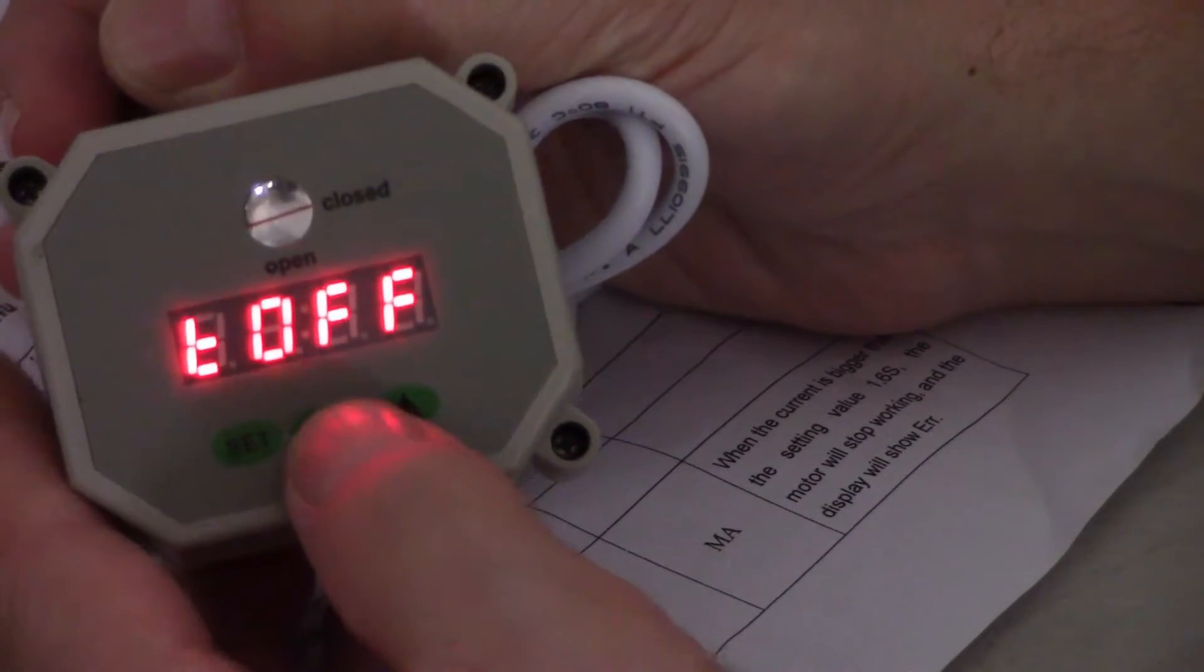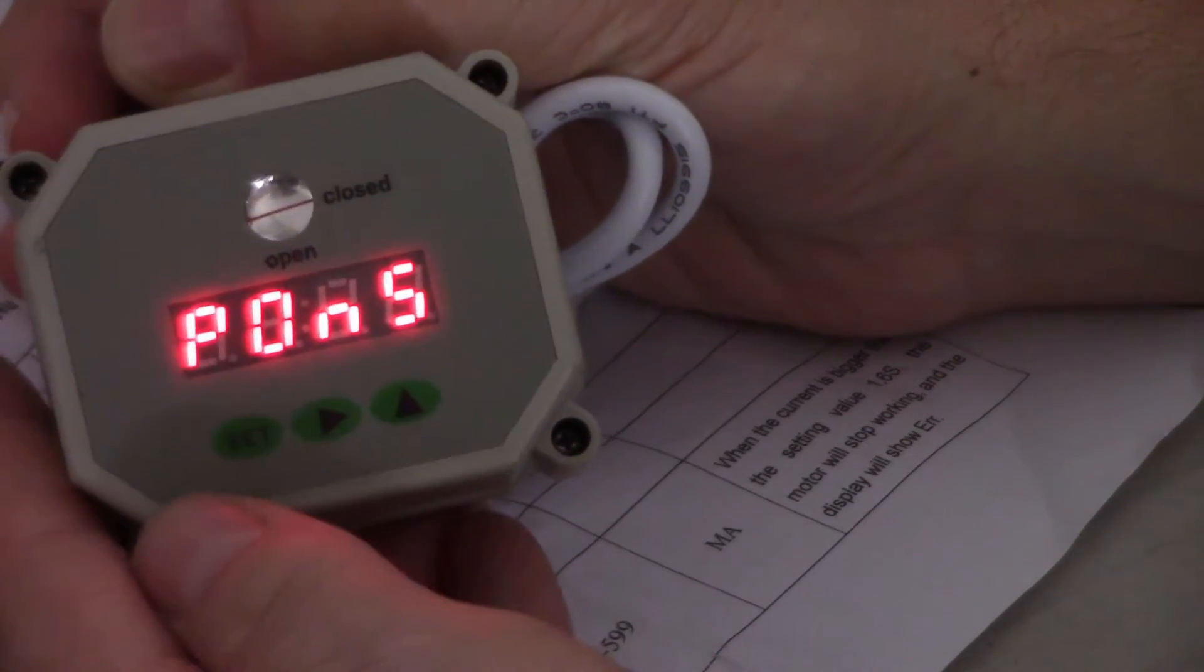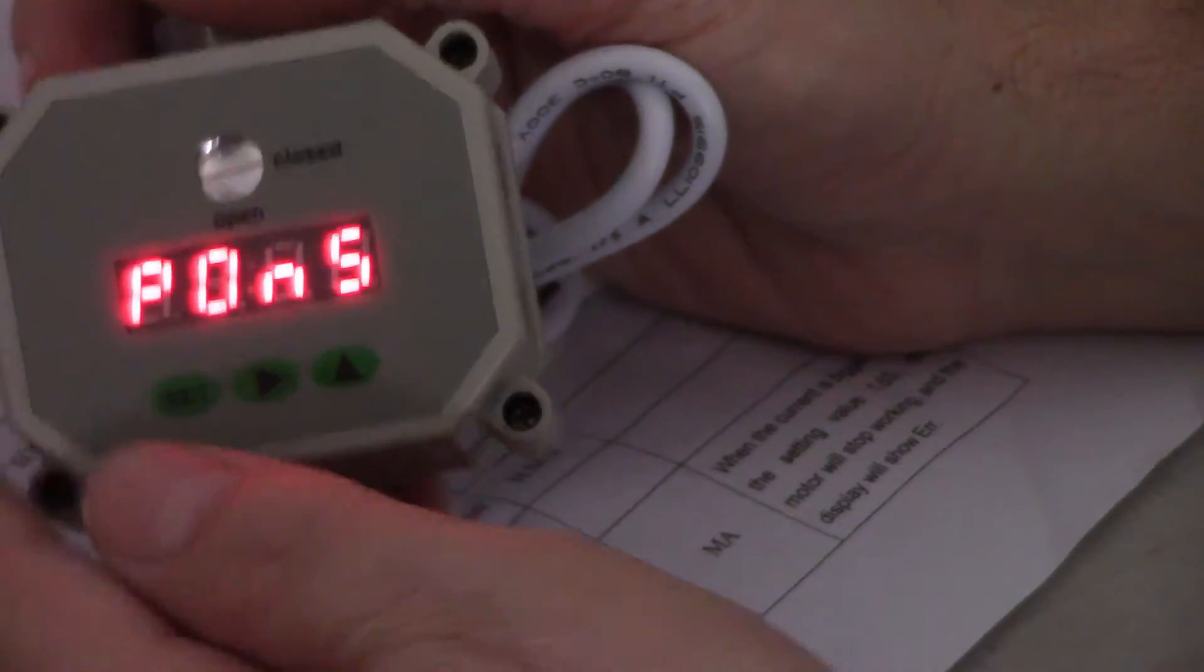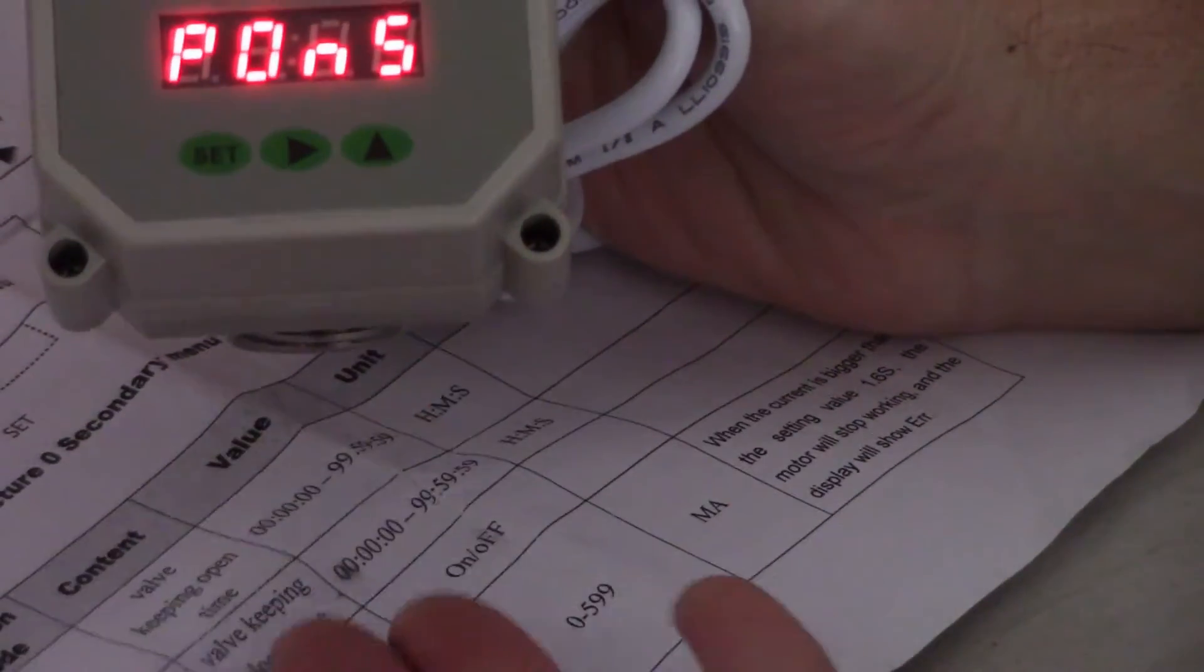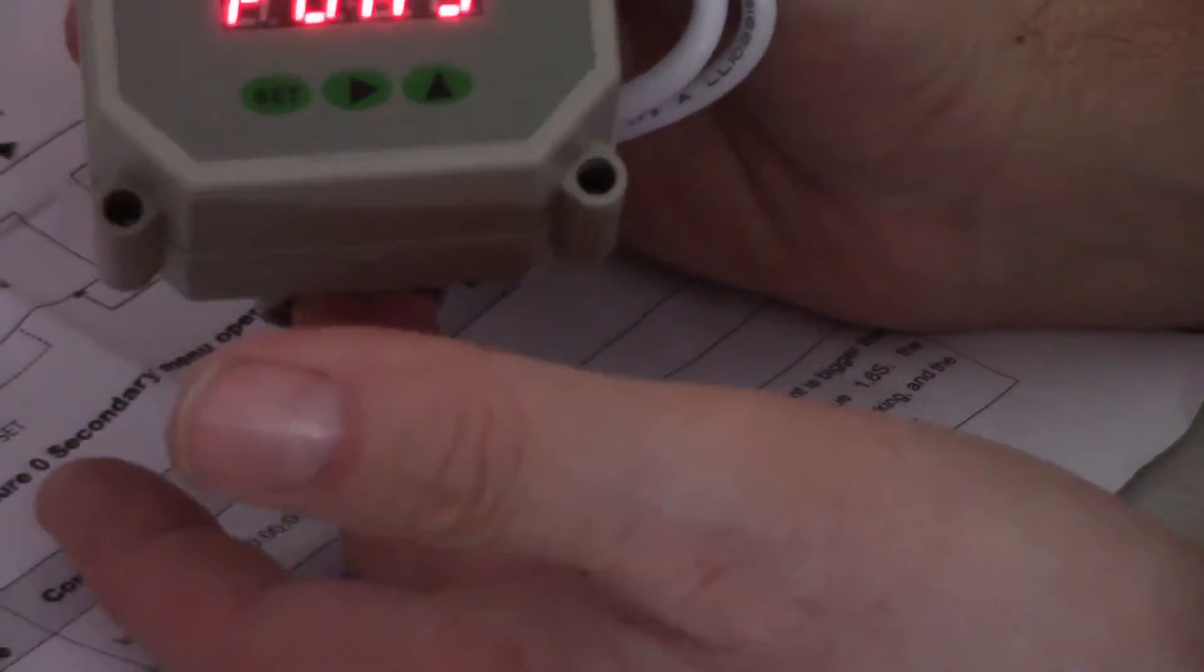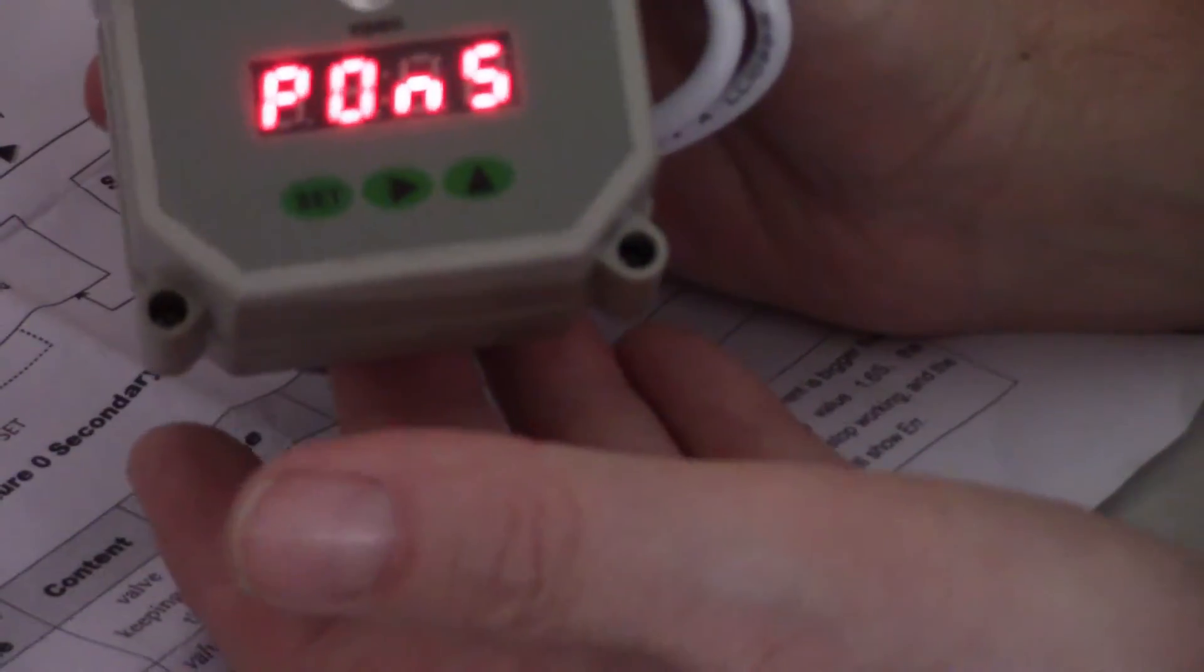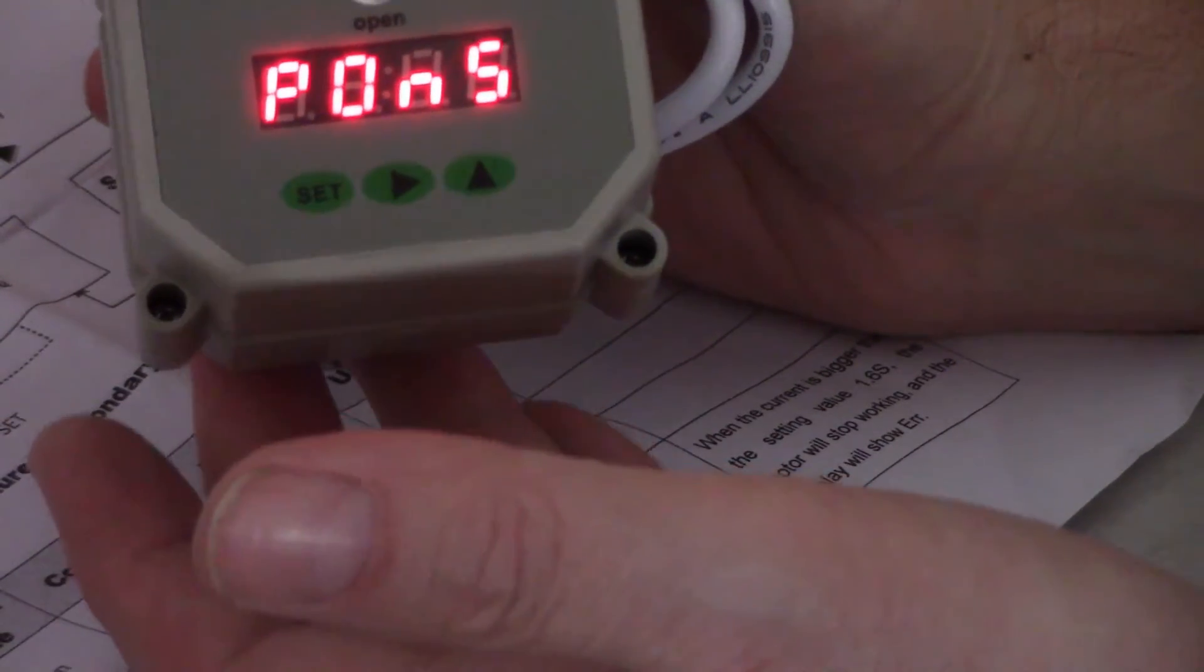Press the set button again. This is if something were to become jammed, if something were to get through into the ball valve that opens and closes, it would cause the motor to want to run and it would start drawing amps.